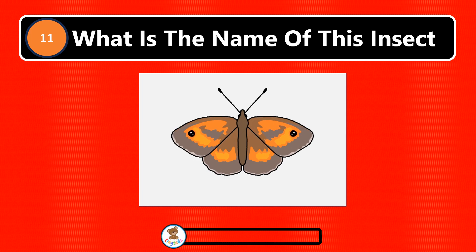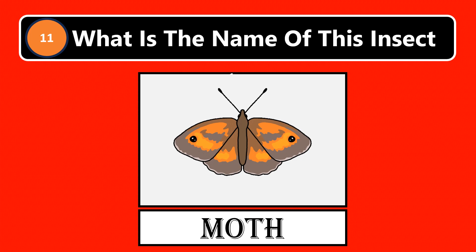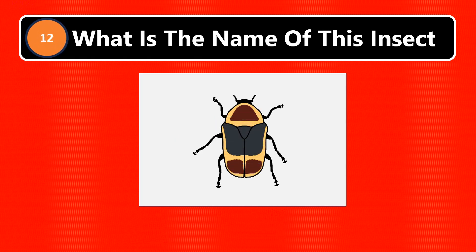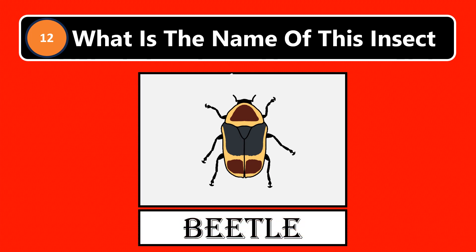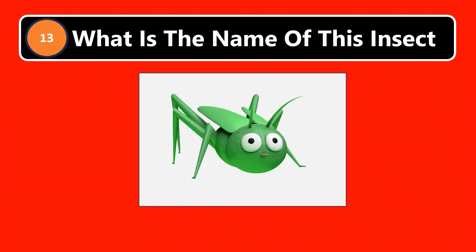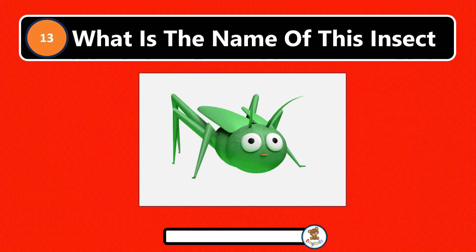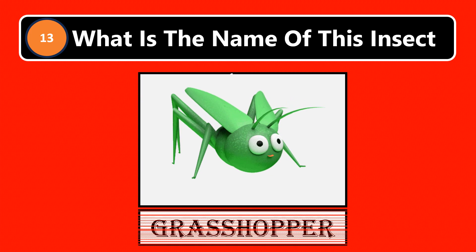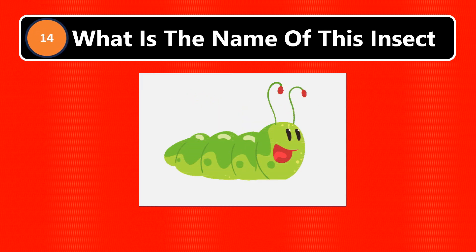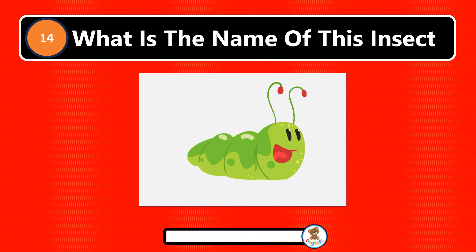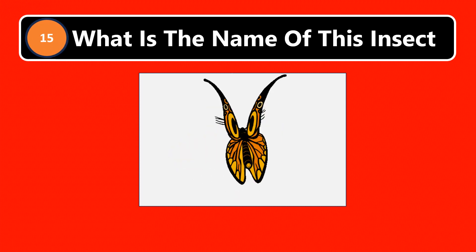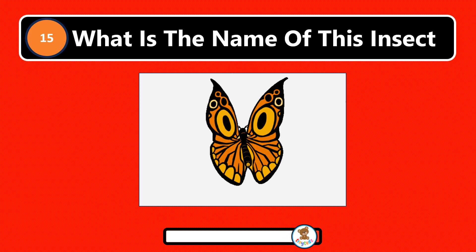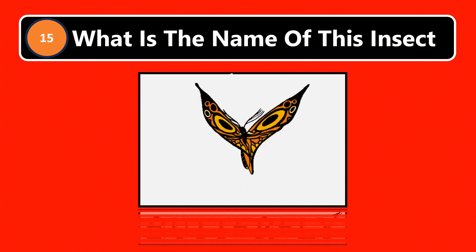What is the name of this insect? Slug. What is the name of this insect? Slug. Caterpillar. What is the name of this insect? Butterfly. What is the name of this insect?